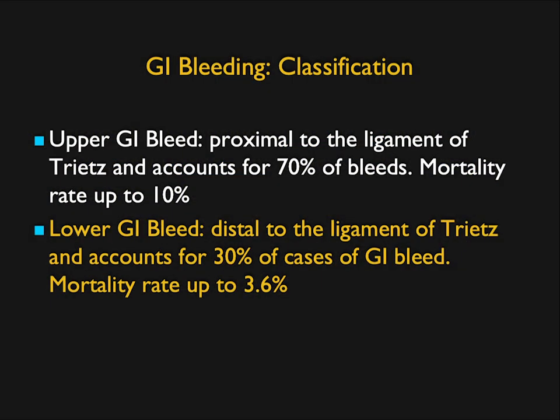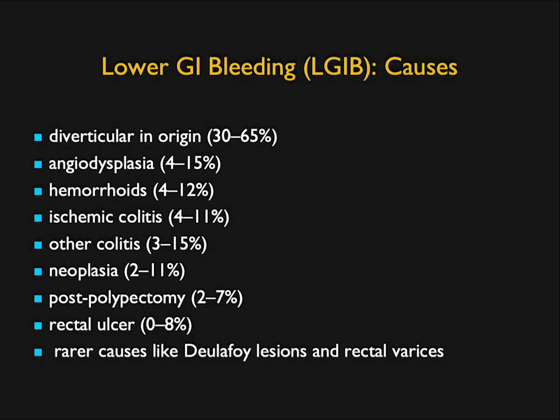Some numbers: upper GI bleeding accounts for about 70% of GI bleeding cases with a mortality of 10%; lower GI bleeding accounts for up to 30% with mortality just under 4%. Causes of lower GI bleeding: diverticular disease is number one, then angiodysplasia, hemorrhoids, ischemic colitis, other colitis, neoplasia, post-procedure causes like polypectomy, rectal ulcer, and some rare diseases.